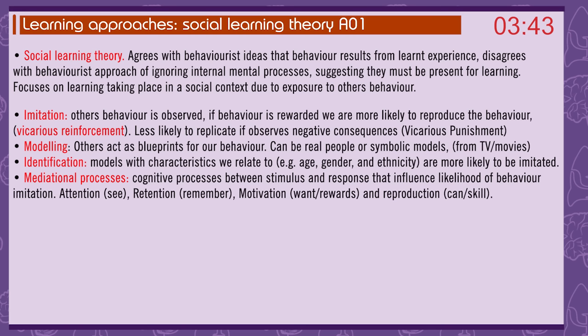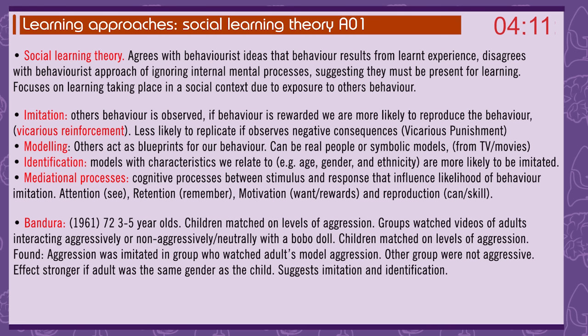Modelling: others act as blueprints for our behaviour and can be real people or symbolic models from TV or movies. Identification: models with characteristics we relate to — age, gender, and ethnicity — are more likely to be imitated. Mediational processes are the cognitive processes between stimulus and response that influence the likelihood of behaviour imitation: attention — seeing it; retention — remembering it; motivation — wanting rewards; and reproduction — being able to do it, having the skill.